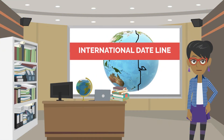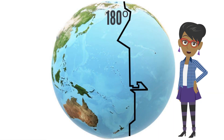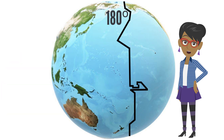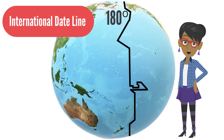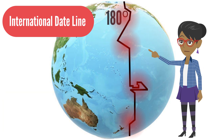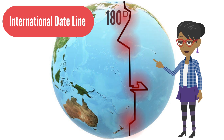The next concept we will explore is the international date line. The 180 degrees line of longitude, on the opposite side of the Earth as the prime meridian, forms the international date line, also known as the IDL. This is an imaginary line that runs north-south through the Pacific Ocean, from the North Pole to the South Pole. The IDL officially separates two different days on the calendar. In order to avoid the confusion of having different days in the same country, the international date line bends and goes zigzag around land masses, such as island countries.